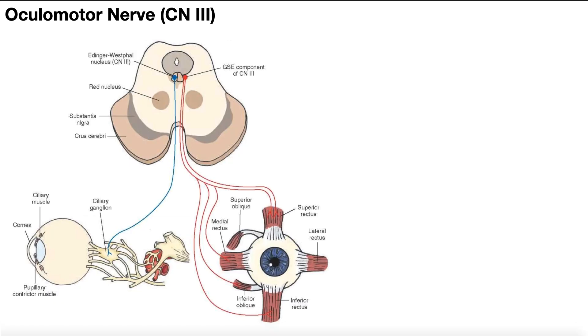In this video and the next, we're going to be talking about cranial nerve 3, which is the oculomotor nerve. This is a purely motor nerve with no sensory function whatsoever, and the motor in its name should give that away. Purely motor.